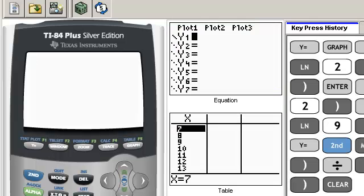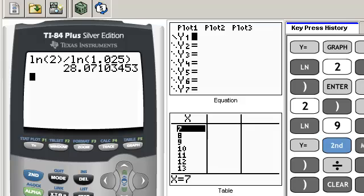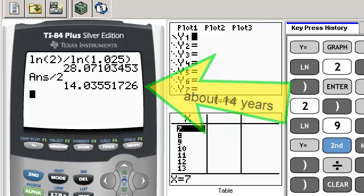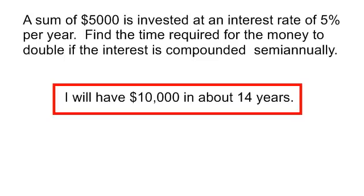Let's go to our calculator and see what answer we get. I am going to do mine in two steps. So, we have the natural log of 2. I'm going to divide that by the natural log of 1.025. But remember, I wasn't done. I had to take that and divide it by 2. So, it looks like I will have $10,000 in approximately 14.04 years. So, I will have $10,000 in about 14 years.